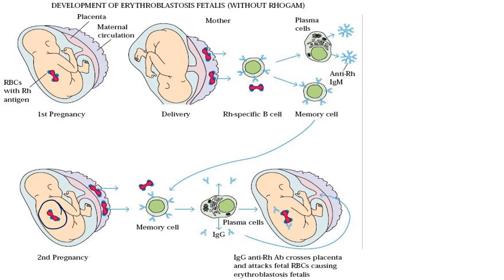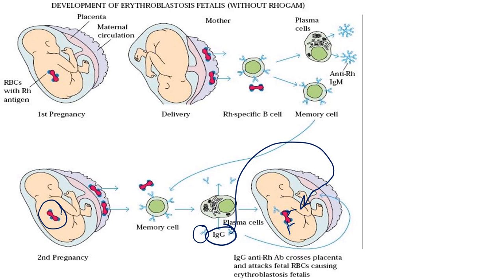During pregnancy the mother and child are connected through the placenta, and the child relies on the mother for nutrition. The placenta selectively allows only some things to pass through the placental barrier. Out of all antibody types, IgG antibodies can cross the placental barrier and enter the child's system, where they attack the RH positive blood cells of the child.